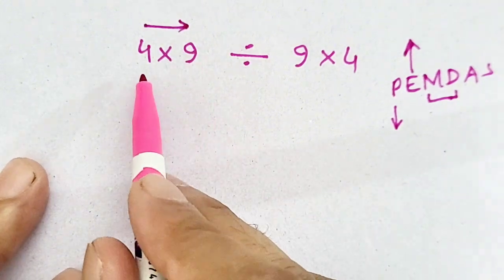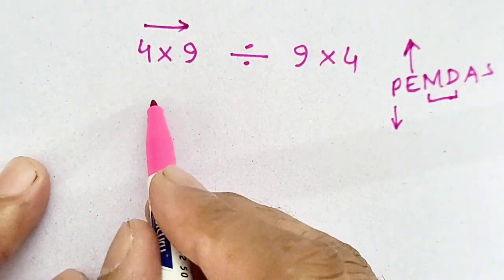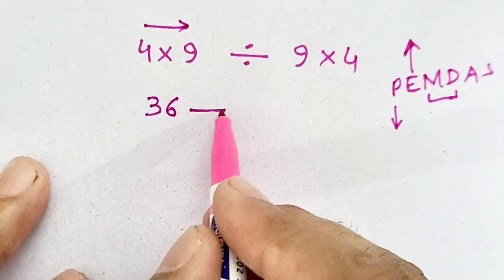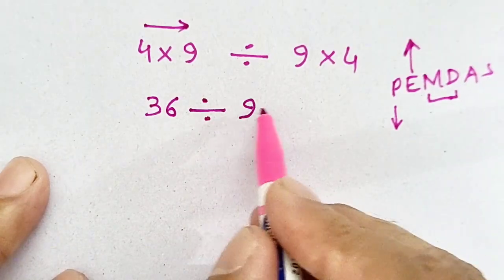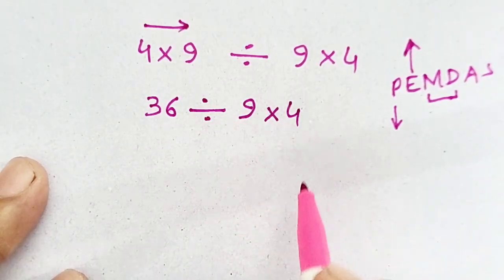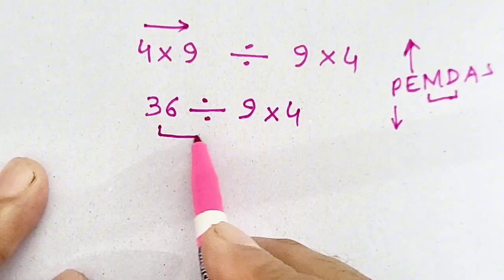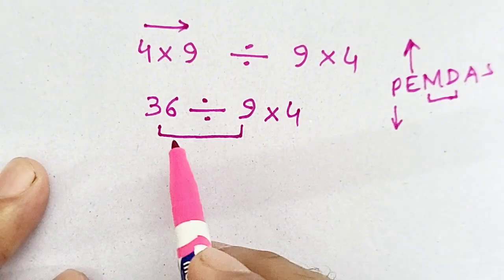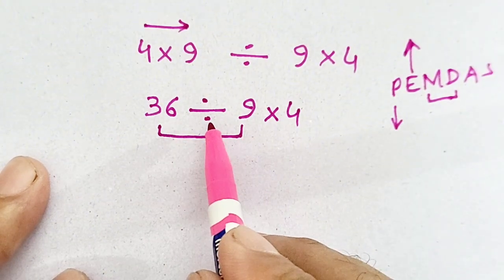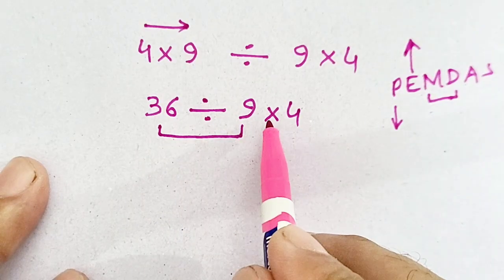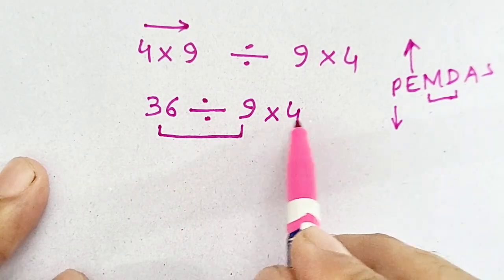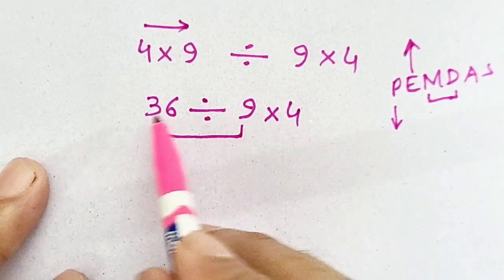First of all, 4 times 9 will be equal to 36 divided by 9 times 4. Now again we have to move from left to right, so 36 divided by 9 times 4.